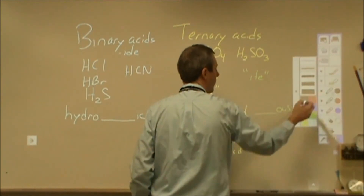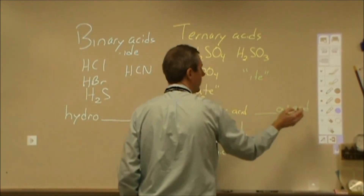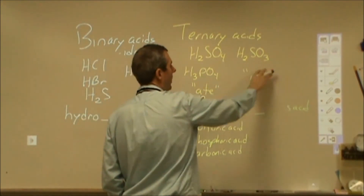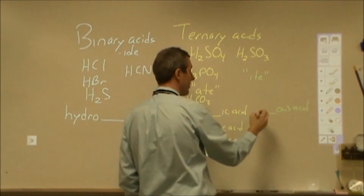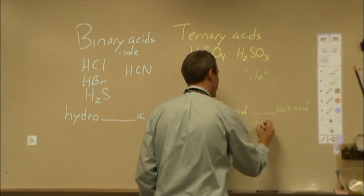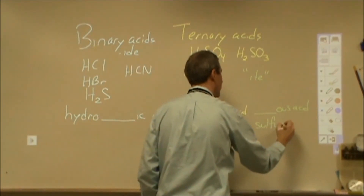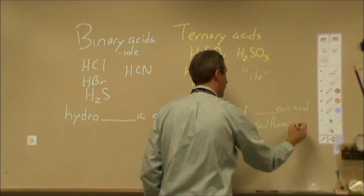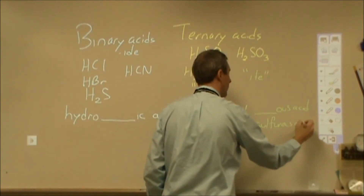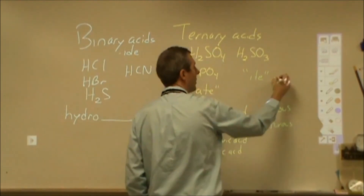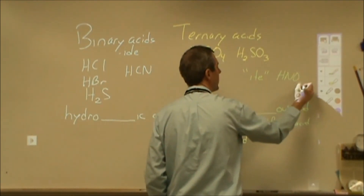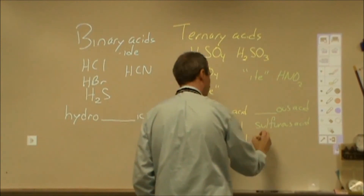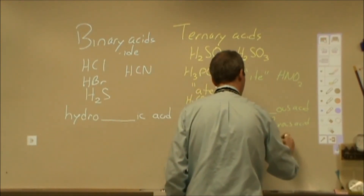If the polyatomic ion ends in '-ITE,' you're going to take the stem from the polyatomic ion followed by '-ous acid.' So if we're looking at H₂SO₃, we're looking at sulfite, so we would change sulfite to sulfurous acid. If we had HNO₂, we have nitrite, and that would become nitrous acid.